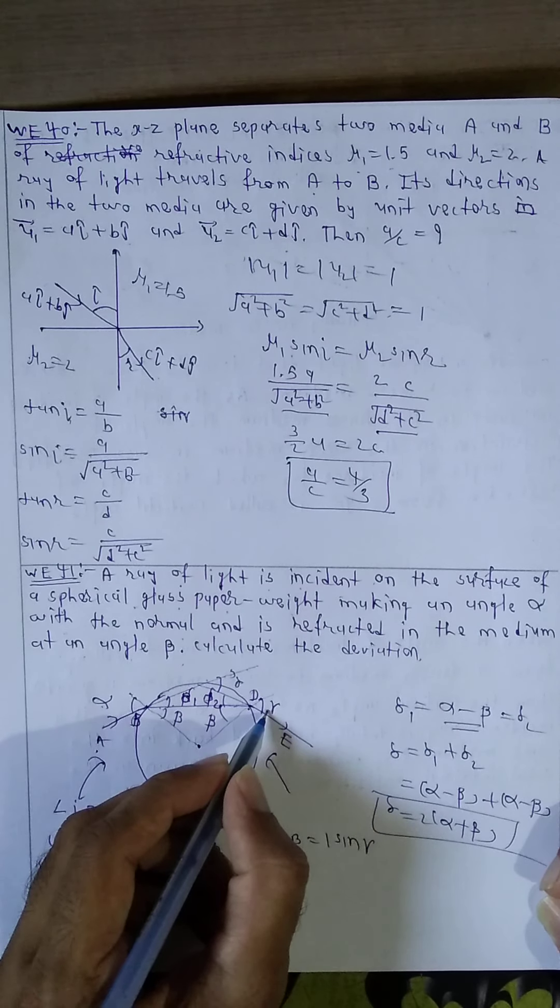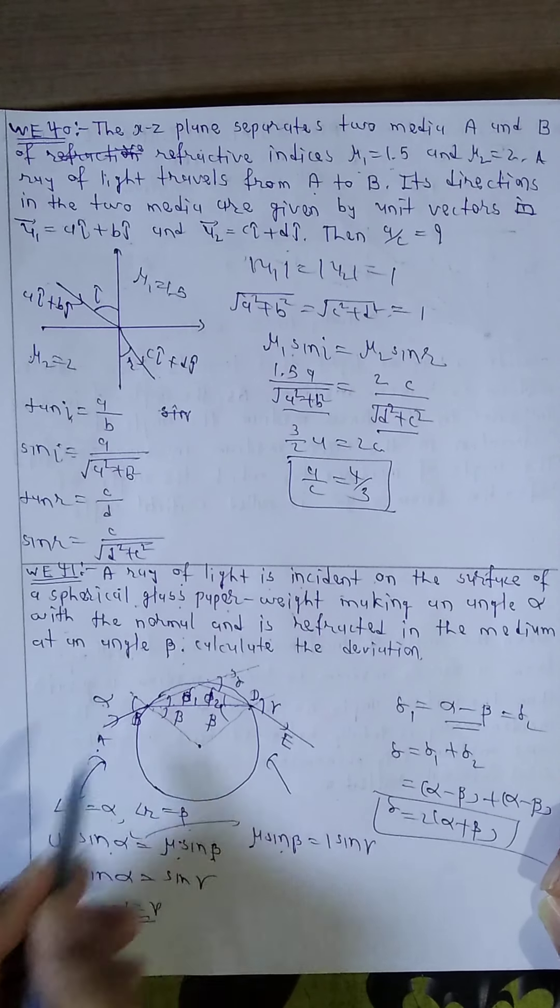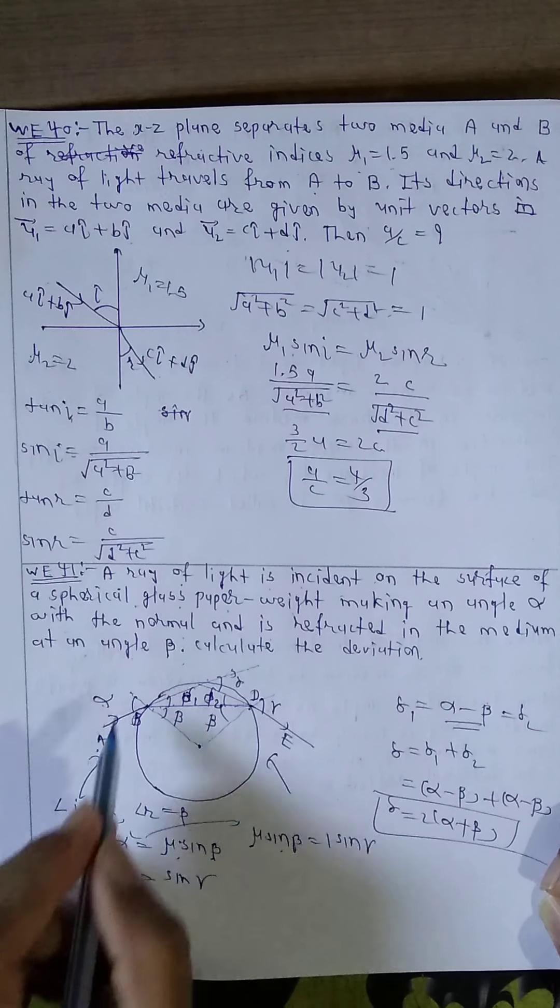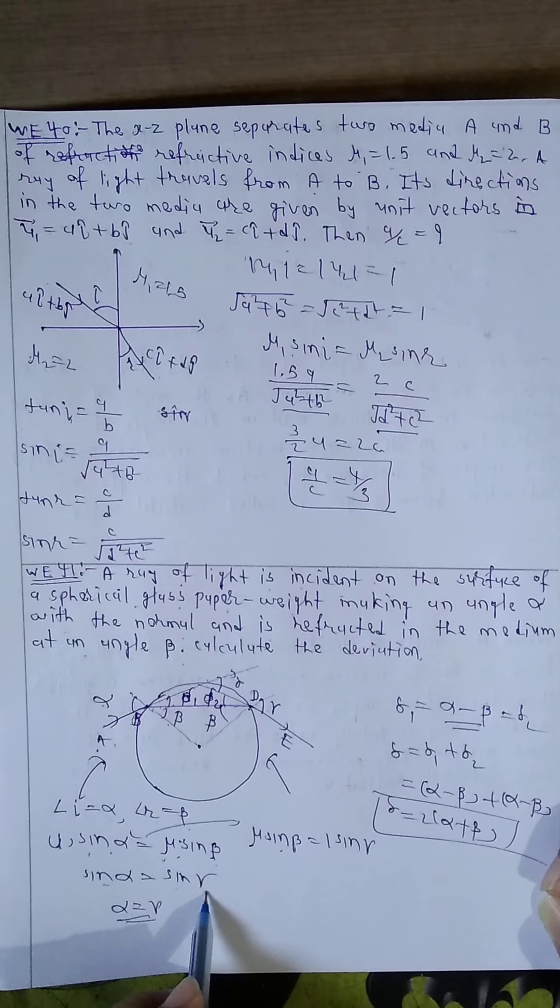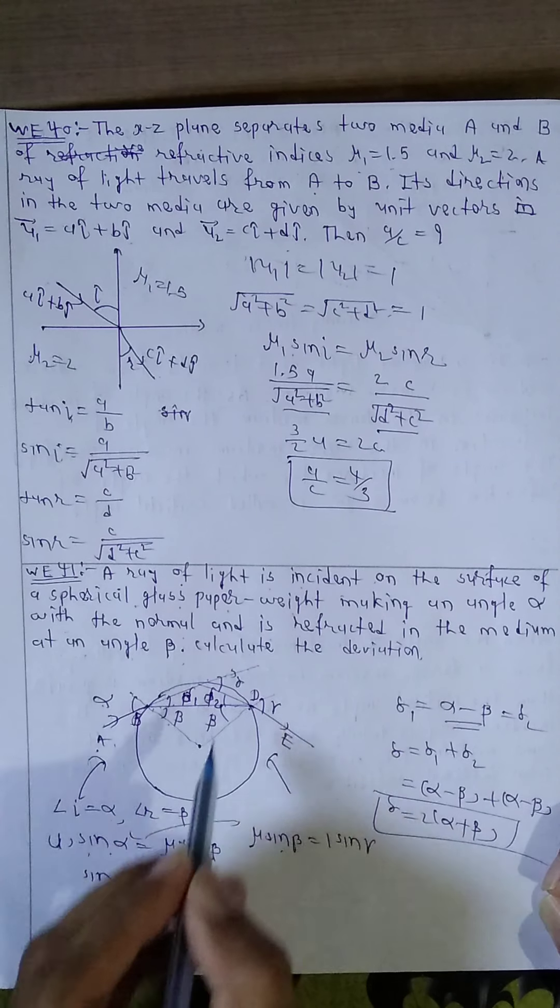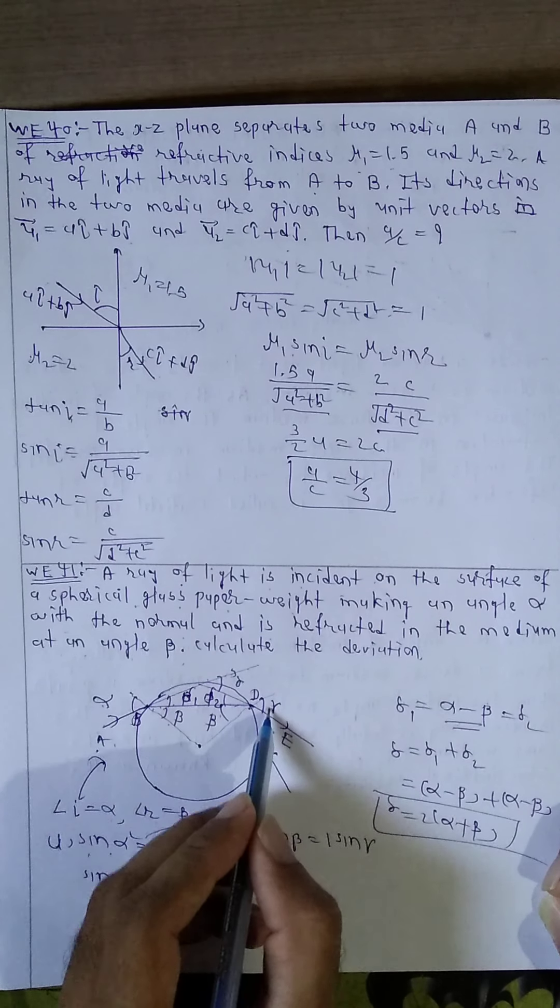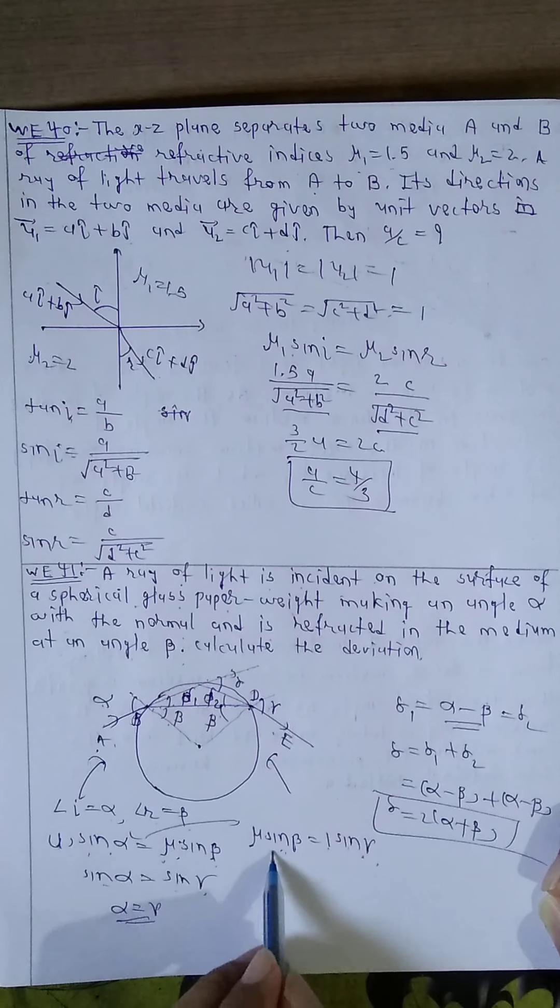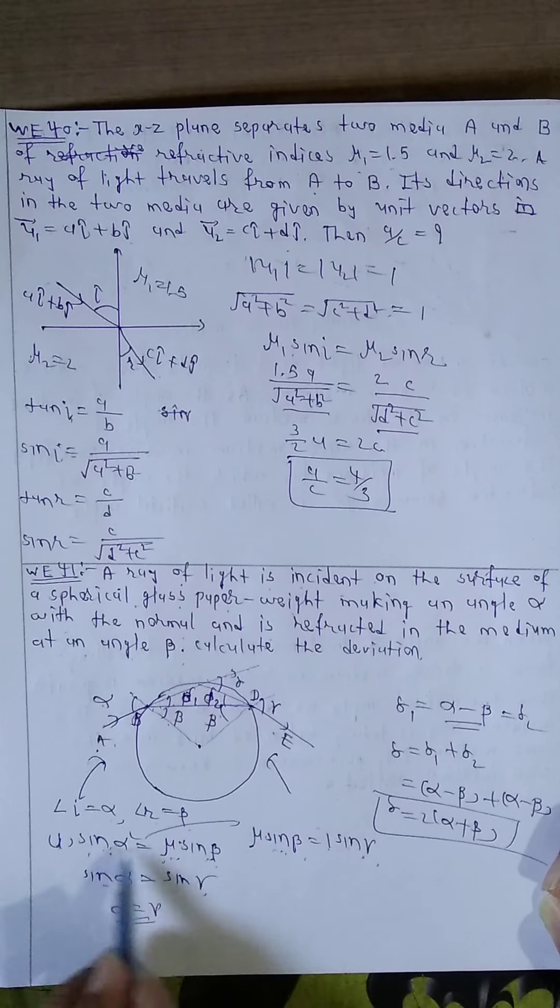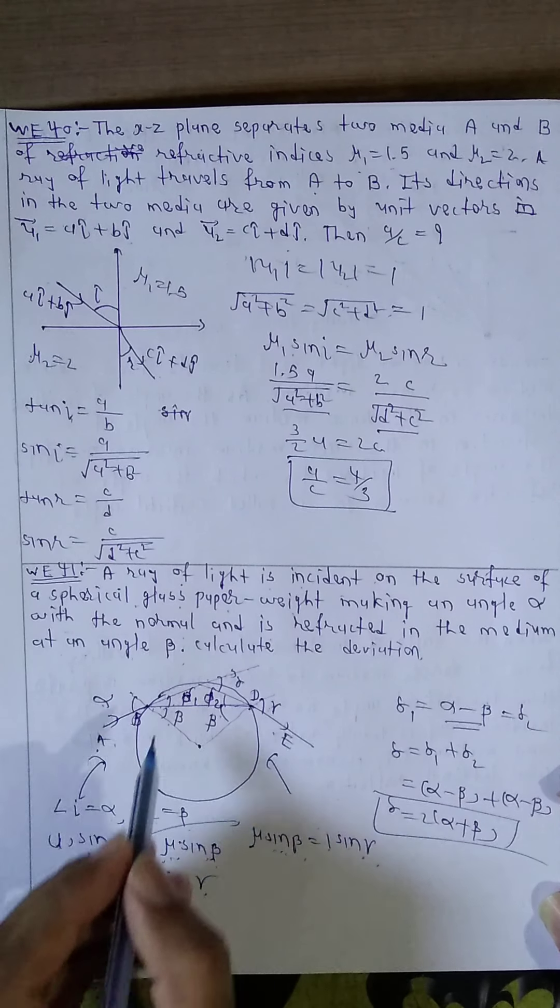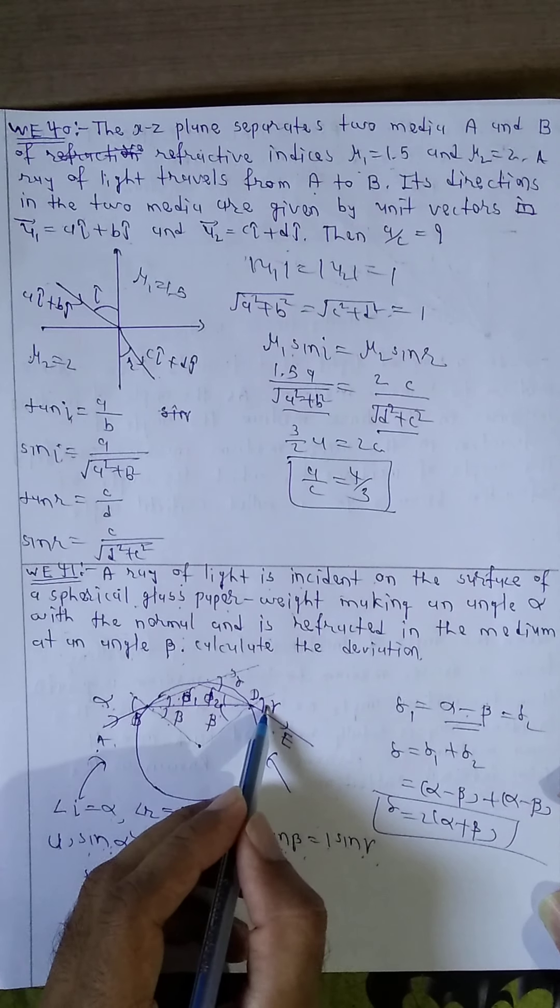Now angle of incidence i equal to alpha, angle of reflection r equal to beta. According to Snell's law at point B, 1 sin alpha equal to mu sin beta. Therefore sin alpha equals mu sin beta. And at this point, mu sin beta equal to 1 sin gamma. Sin gamma equal to mu sin beta. Mu sin beta equal to sin alpha compared to this equation. Therefore alpha equal to gamma.